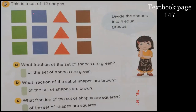Now we have a set of 12 shapes with two shapes but different colors: green square, blue square, red triangle, and brown square. What fraction of the set of shapes are green? There are four groups total, and green is one group — so one out of four. What fraction are brown? Brown is also one group out of four.